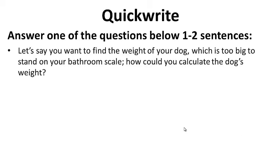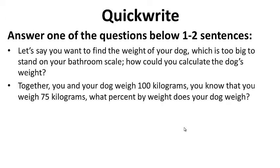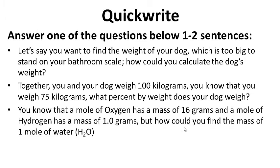For your quick write: let's say you want to find the weight of your dog, which is too big to stand on your bathroom scale. How could you calculate the dog's weight? Together, you and your dog weigh 100 kilograms. You know that you weigh 75 kilograms. What percent by weight does your dog weigh? Also, you know that a mole of oxygen has a mass of 16 grams and a mole of hydrogen has a mass of 1 gram. How could you find the mass of 1 mole of water, H2O? Go ahead and pause this while you do your quick write.